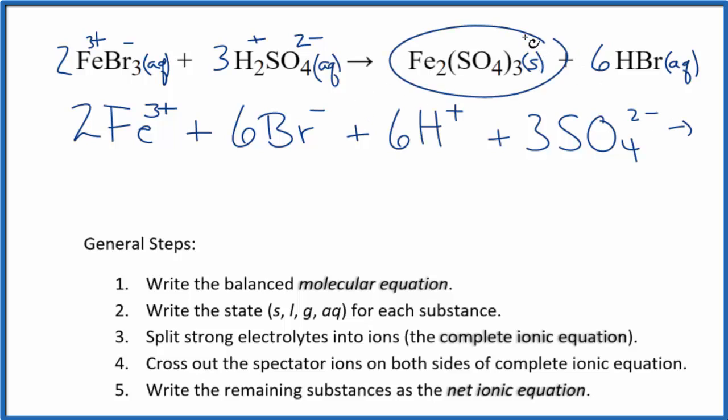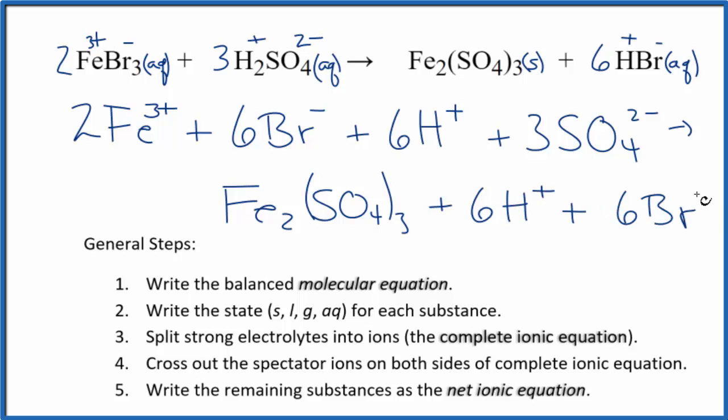For the products, we don't split solids apart. So we're going to just keep that as Fe2(SO4)3, and then we said hydrogen positive, bromide ion negative. 6 hydrogen ions, just like the reactants, and 6 bromides, also like the reactants.